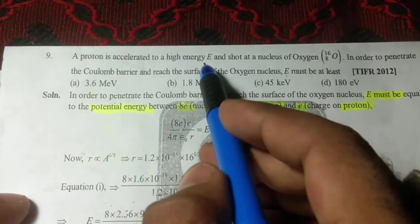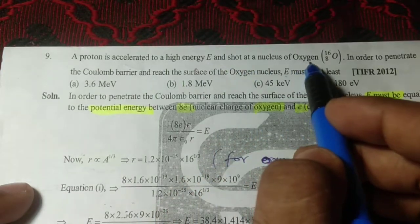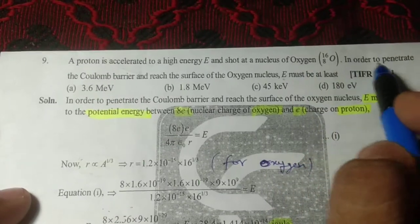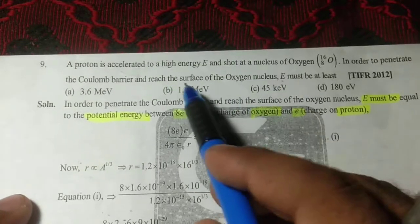So the question asks: for a proton accelerated to high energy E to penetrate the Coulomb barrier and reach the surface of the oxygen nucleus, what must E be?